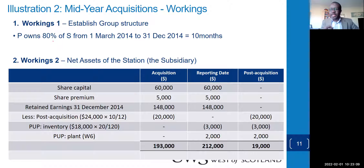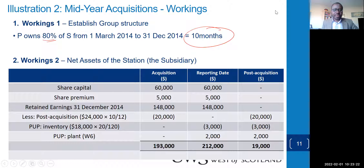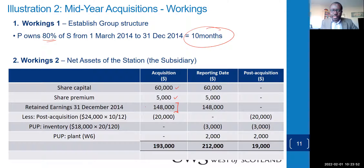The ownership structure is 80% for 10 months. For W2 — net identifiable assets of the subsidiary: share capital, share premium, and any other equity components are included. Retained earnings at year-end are 148,000. We deduct the post-acquisition profits: 10/12 of the full-year profit of 24,000, leaving pre-acquisition retained earnings. The difference gives pre-acquisition of 128,000.